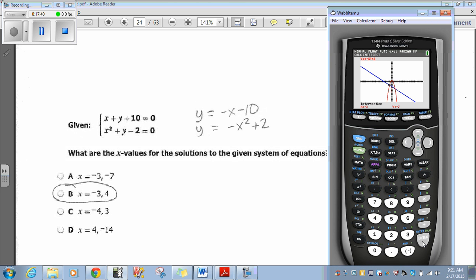So, since negative 3 is an x, that means my options are going to be either A or B. Now, I need to find my second x. So, I would go to 2nd, trace, intersect, come on over here, my bound, my bound, guess. Now, it says x is 4, y is negative 14. So, my second x is 4. The only option that has x as negative 3 and 4 is option B.